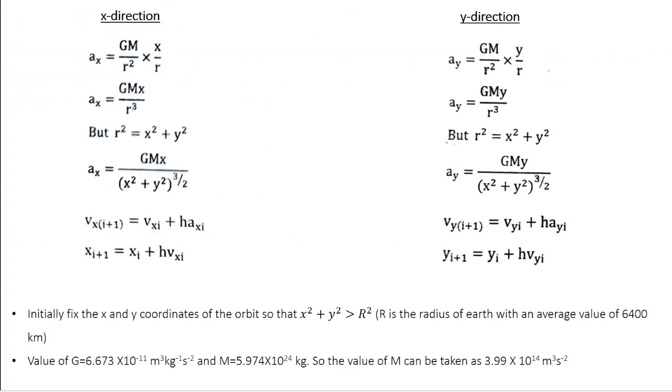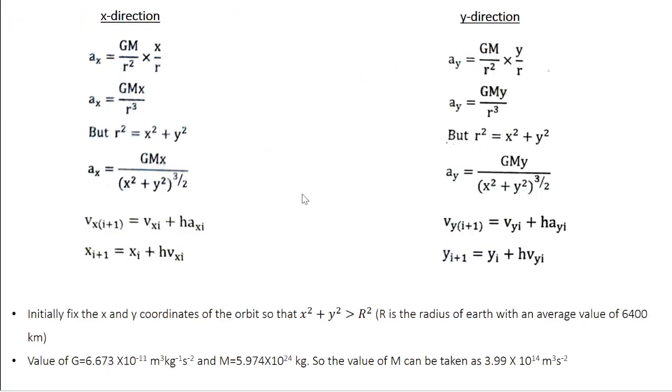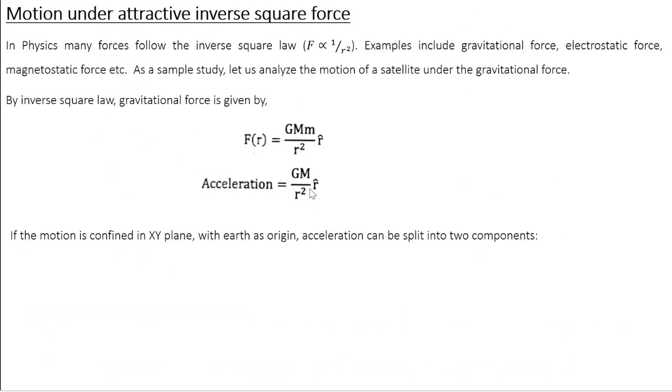Along the X-direction, what are the acceleration, velocity and position? We know the general equation for acceleration. So in the X-direction, acceleration is given by GM/R² multiplied by r̂. You have an R cap vector, this is a unit vector. So how do you get the unit vector?